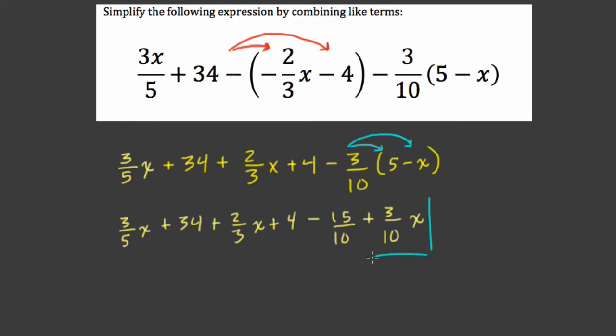And now I'm going to combine like terms. Here are my x terms. I have 1, 2, 3 x terms. I'm going to combine those. And I have 1, 2, 3, notice I include the negative sign here, constant terms.